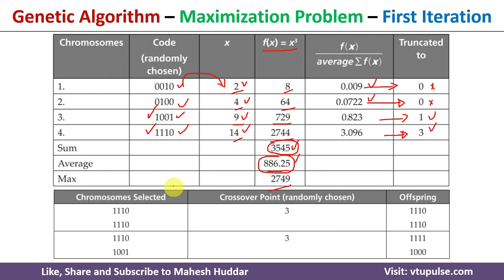In this case, I have selected the second chromosome two times, and then selected the crossover point randomly as 3. After the third point, whatever gene is there in the chromosome, we need to exchange it. After the third gene, we have 0 and 0, so once you exchange them, we get the same values. The new offspring chromosomes are 1110 and 1110.